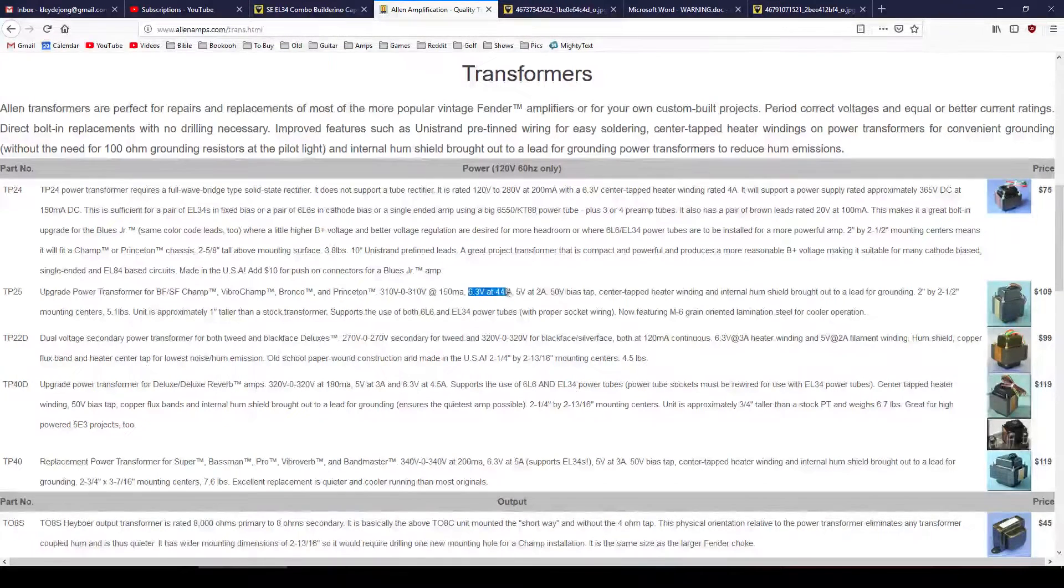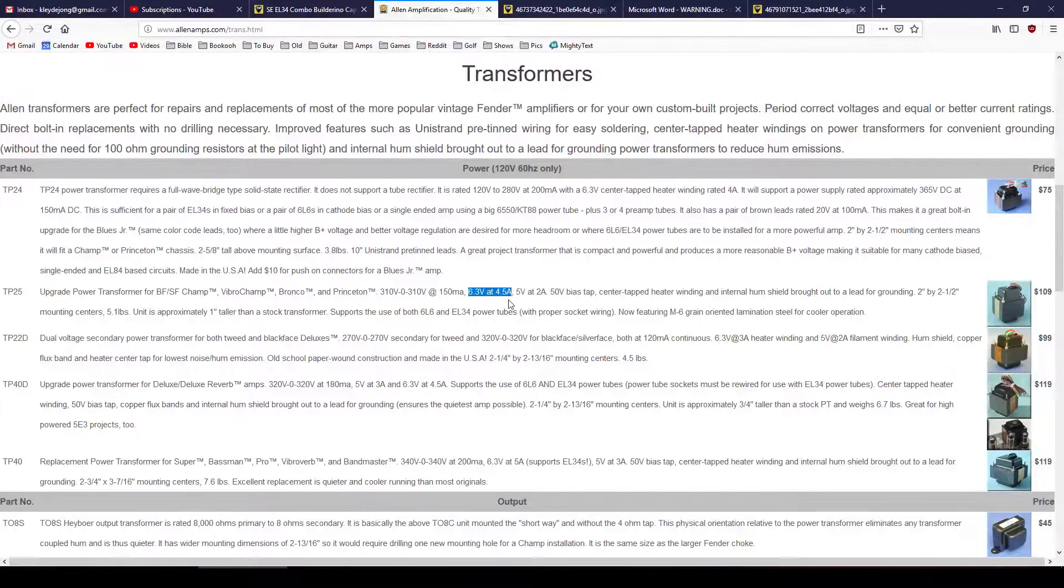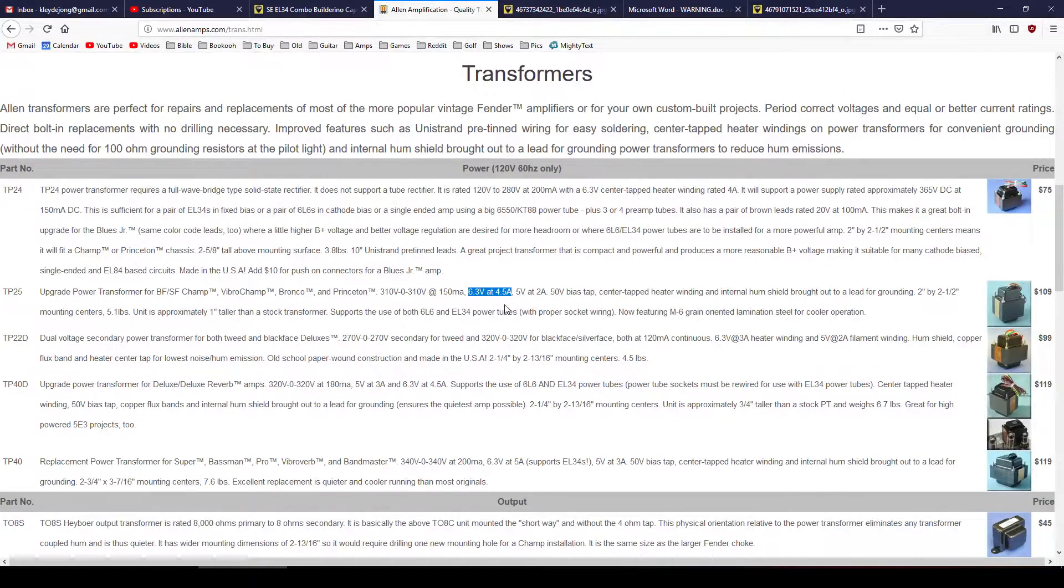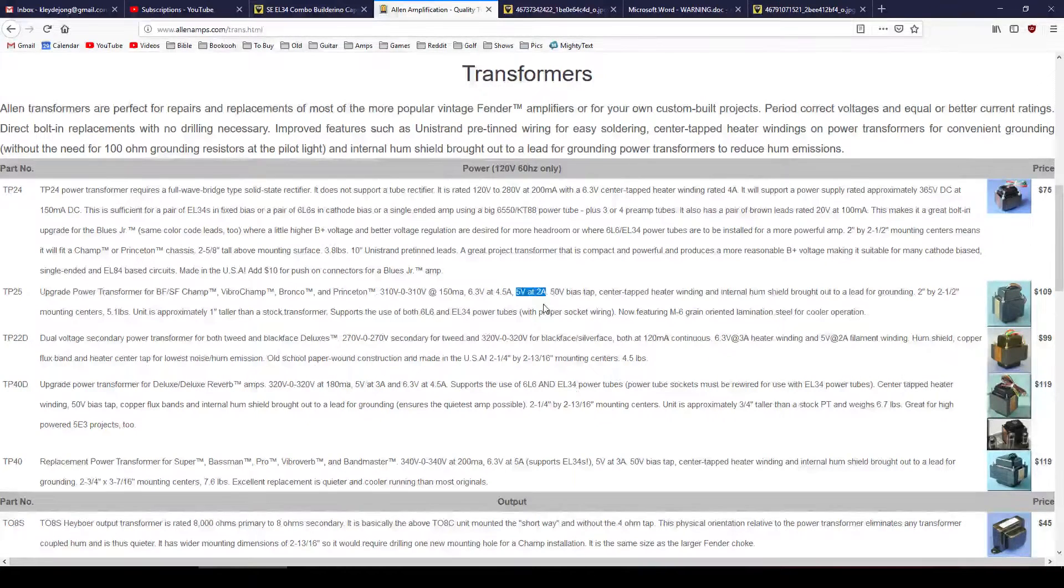Then we also have 6.3 volts at 4.5 amps of current. That also determines how many tubes you can run. If you're going to run tremolo or reverb, or have a lot of input channels, maybe cascading gain stages, four or five 12AX7s in the preamp, you need to have enough 6.3 volts to supply the heater voltage to each of these tubes. And then also we have a 5 volt tap at 2 amps that is going to determine what kind of tube rectifier we're going to use, if you want to use one at all. You have the opportunity to do so.